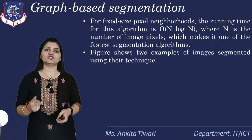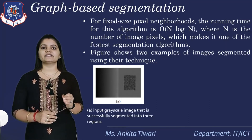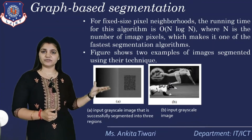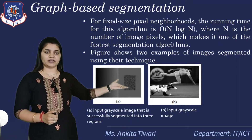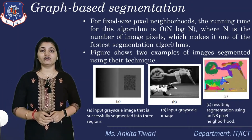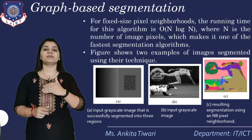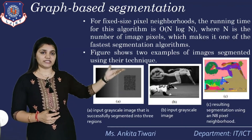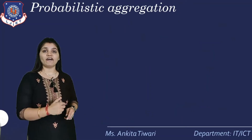Here I am showing you the figure that shows two examples of images that are segmented using these techniques. The first image is an input grayscale image that is successfully segmented into three regions — region one, two, and three — separated out as: blackness, gray/white scale, and whiteness. Now we are inputting the grayscale image and finding out the resulting segmentation using the N8 pixel neighborhood, meaning with one selected pixel we are considering eight neighboring pixel regions — the four direct and four diagonal. This is how graph based segmentation is done.